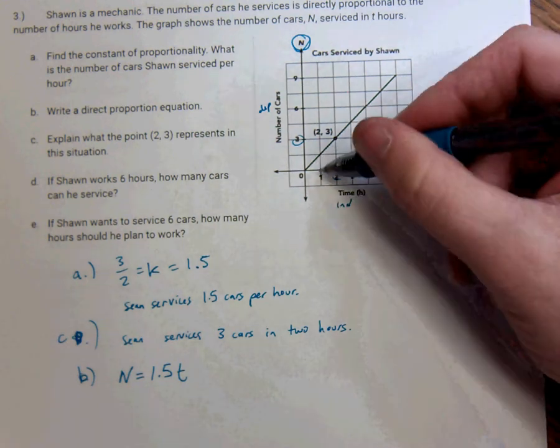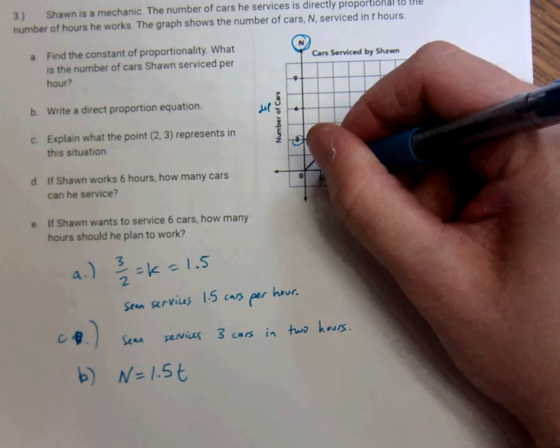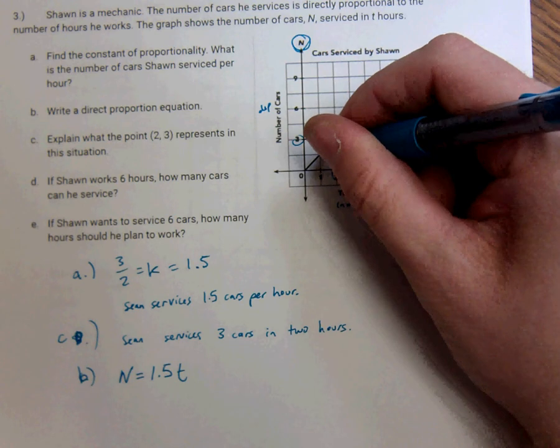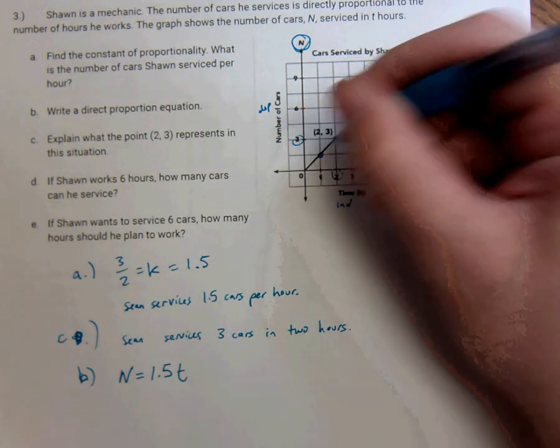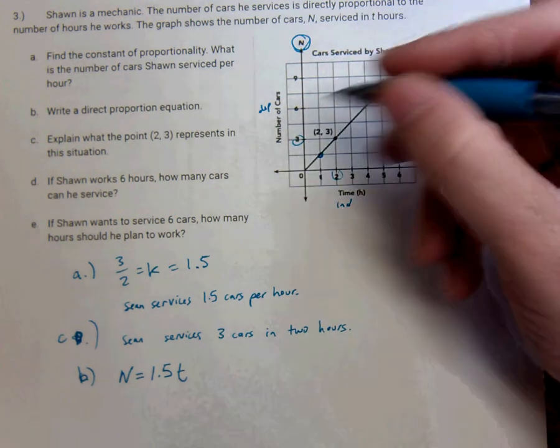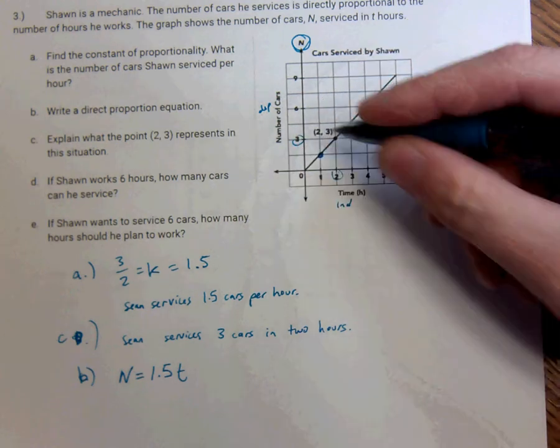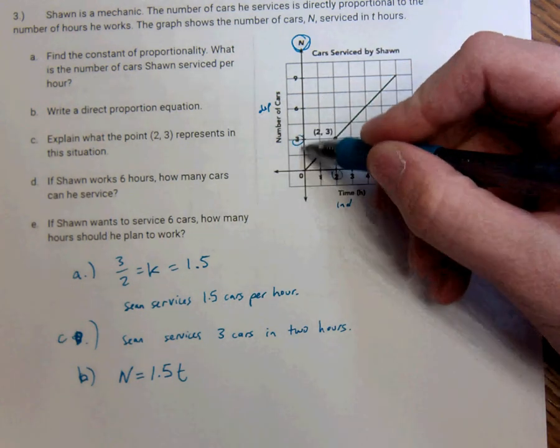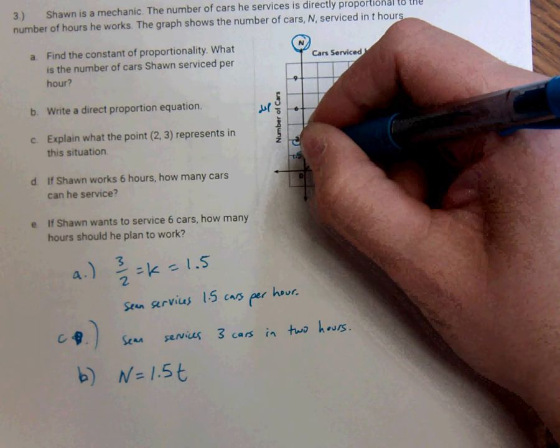Basically, this number times 1.5 is going to be that number, which makes sense. That point is actually 1.5. It's not written here, but think about it. This is 0 to 3. It's divided in two parts, 1.5.